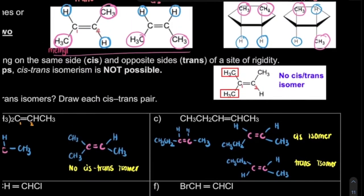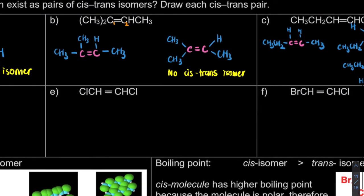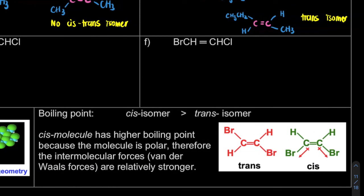Examples D, E, and F you should try yourself. Now let's look at the melting point and boiling point of cis-trans molecules. For melting point, the trans isomer has a higher melting point than the cis isomer, because in the trans molecule the molecules are more closely packed in the solid state, requiring more energy to break the intermolecular bonds.